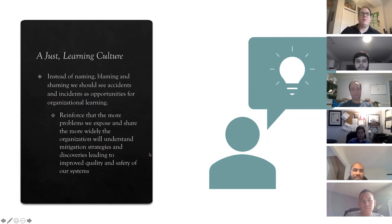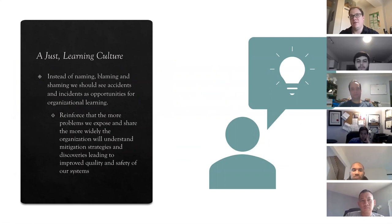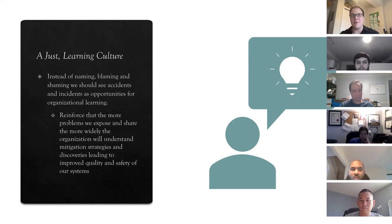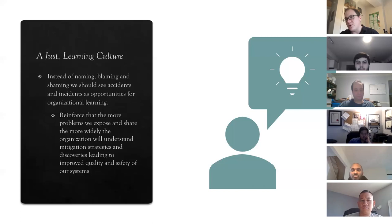Instead of naming, blaming, and shaming, we want to see accidents as an opportunity for organizational learning — just like our CTO did in that situation. I never heard anything about it again, never felt it was held against me — in fact, he promoted me. We want to reinforce that the more we can expose problems and share those problems, the more we create a culture of building mitigation strategies. The more the organization understands those things, the more you can absorb discoveries from a broken process. This doesn't just apply to security issues — it could be all sorts of things, like adding a line of code that deletes a database.